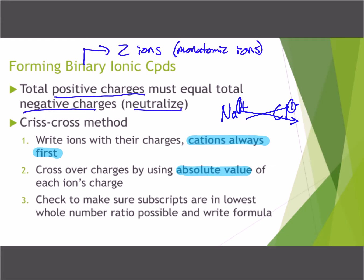Draw your arrows in at first, and eventually we'll get away from that. When we crisscross those over, our final formula is NaCl — Na1Cl1, but we don't write the ones, so it's just NaCl. The last step, which people often forget, is making sure our subscripts are in the lowest whole number ratio possible. This is called an empirical formula.